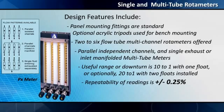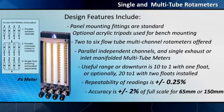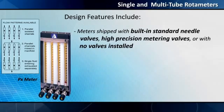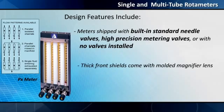Repeatability of readings is plus or minus 0.25%. Accuracy is plus or minus 2% of full scale for 65 mm or 150 mm, and plus or minus 5% of full scale for direct reading meters. Meters are shipped with built-in standard needle valves, high-precision metering valves, or with no valves installed. Thick front shields come with molded magnifier lens.